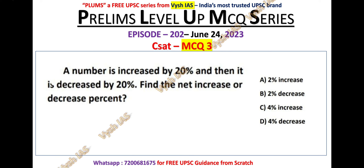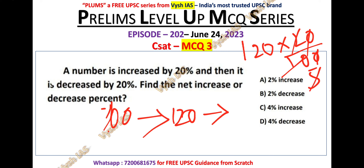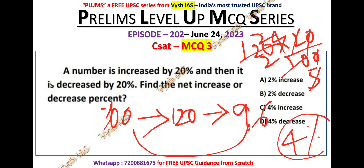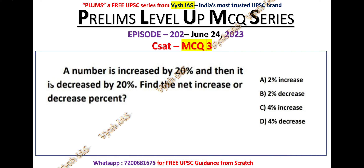Now let us solve MCQ number 3. A number is increased by 20% and then decreased by 20%. Find the net increase or decrease percent. Let us take the number as 100. First it is increased by 20%, so it becomes 120. Then it is decreased by 20%, so 20% of 120 is 24. So 120 minus 24 is 96. The net change is 4% decrease. So option D is the correct answer for MCQ number 3.